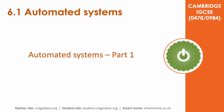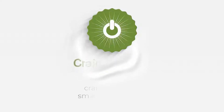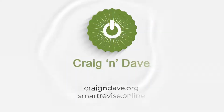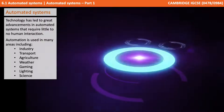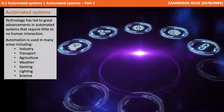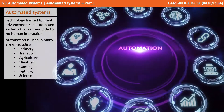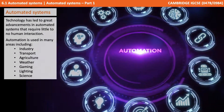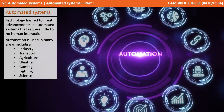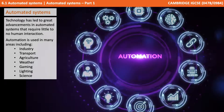This is part one of a two-part series on automated systems. Technology has led to great advancements in automated systems which require little or no human interaction.